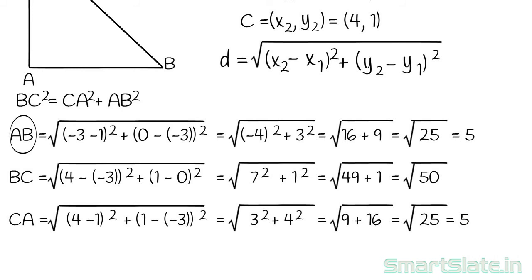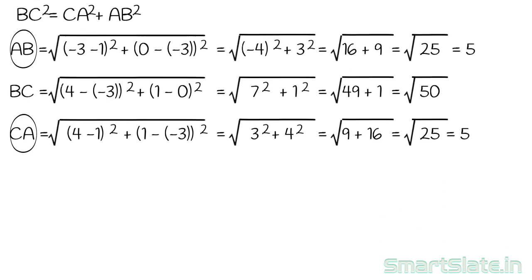Since AB and CA are equal, the triangle formed by these points is an isosceles triangle. Now let's prove that it is also a right-angled triangle. According to the Pythagorean theorem, if the square of the longest side is equal to the addition of the squares of the other two sides, then the triangle is a right-angled triangle.